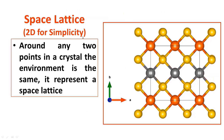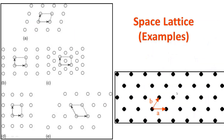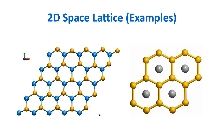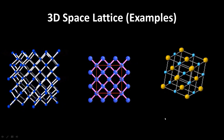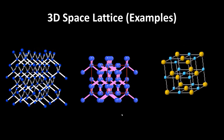Space lattice, defined in two dimensions for simplicity, means that around any two points in a crystal the environment is the same. For any given point, on four sides it has atoms, and similarly for any other point. The complete structure connecting such points is called a space lattice. Examples A through E show 2D space lattices, and 3D space lattice examples are also shown as crystal structures spreading into space with each unit cell multiplying with its symmetry.